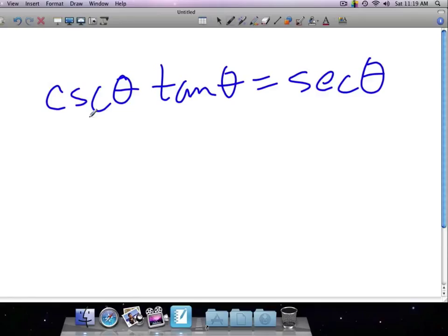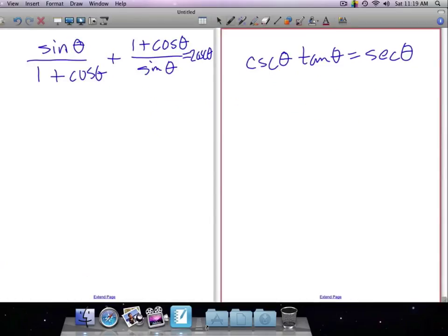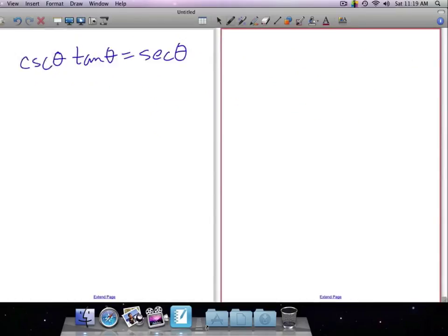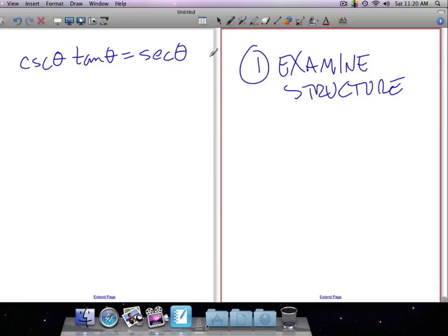One strategy that many books tout as the first thing you should do is change everything to sine and cosine. I do not necessarily subscribe to that. I subscribe to the idea of one, first of all, examine structure and I'll write these on the center board in class and leave them up for a while. Examine structure and that's what I just did previously. There's only one term here, there's only one term here. This term has two factors, this term has one factor. Structure. It's not two terms so there's an addition and how do I break this up so that there are two terms? There are only one term on each side so that's examining structure.